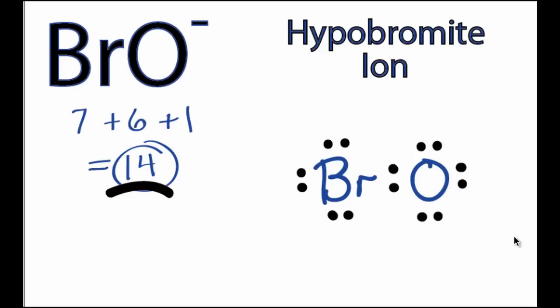One last thing we need to do to complete the BrO⁻ Lewis structure is put brackets around our structure to show that it's a negative ion. So that's the structure for BrO⁻.